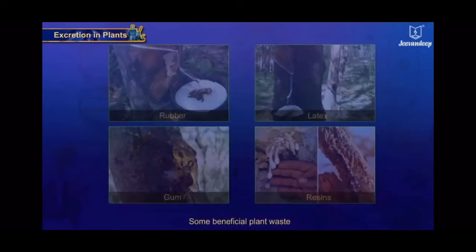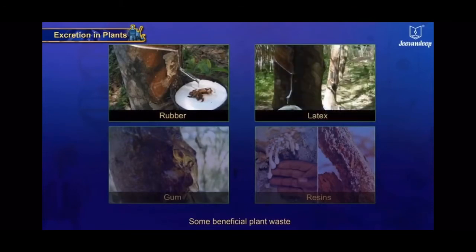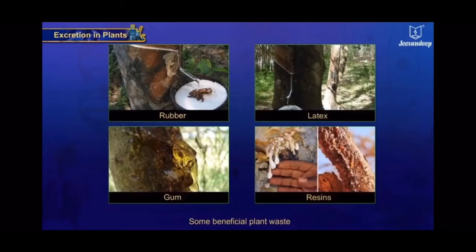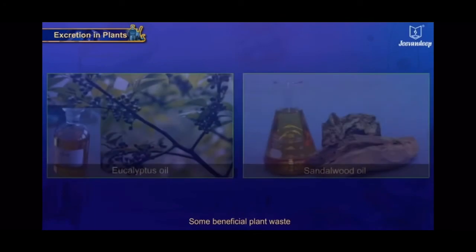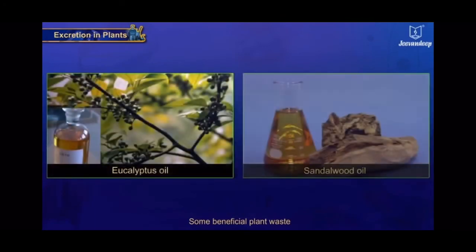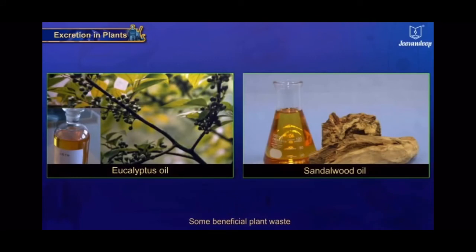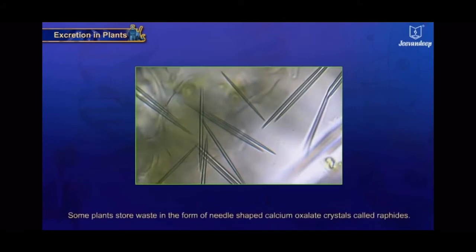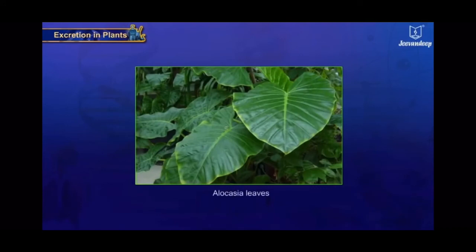Some plant wastes such as rubber, latex, gum, resins, and essential oils like eucalyptus oil and sandalwood oil are beneficial to human beings. Some plants store waste in the form of needle-shaped calcium oxalate crystals called raphides. These crystals hurt and cause itching, for example in Alocasia leaves.